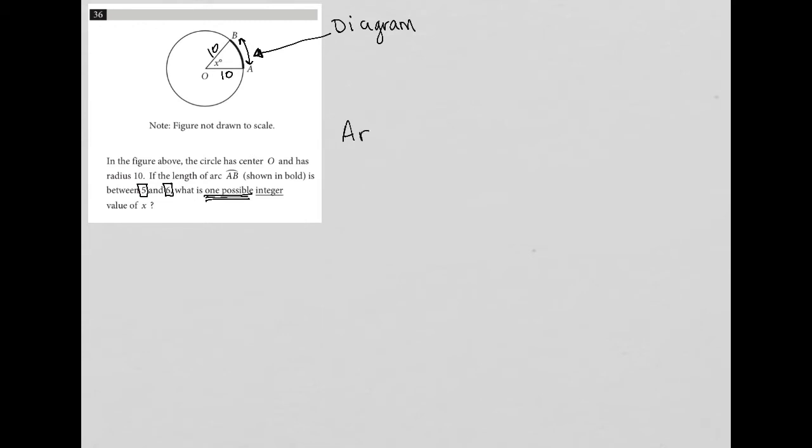So how do we find arc length? What I like to do is use this formula that says x, or the central angle, divided by 360, or the total angle measurement of a circle, multiplied by the circumference, which is the length of the entire circle, so 2πr. So this is the fraction of the entire circle, basically, is how I think about arc length.